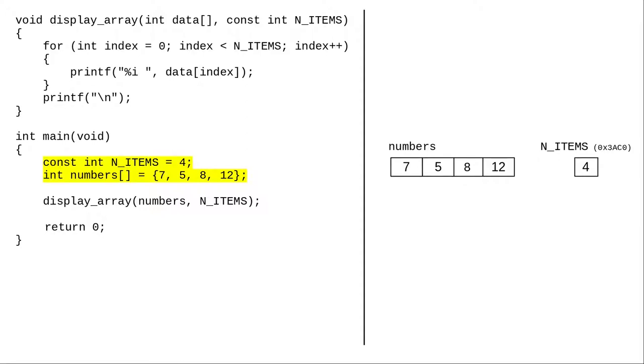For N_ITEMS, it's the address of the value 4. For numbers, it's the address where the array starts in memory.